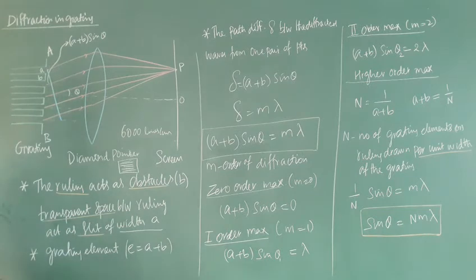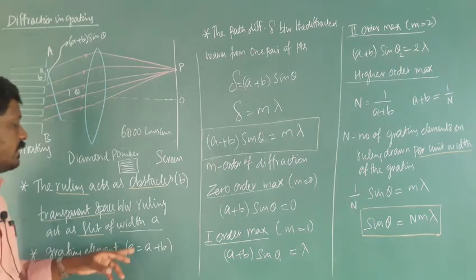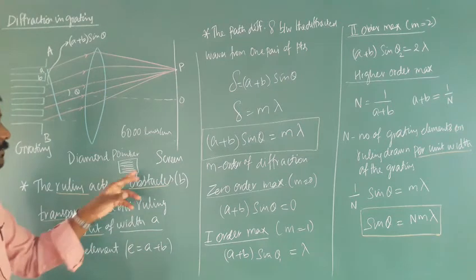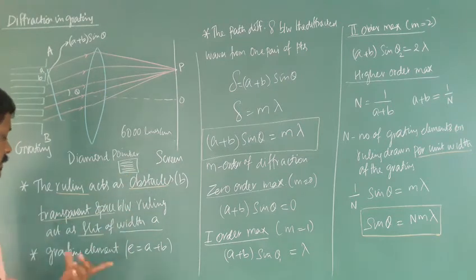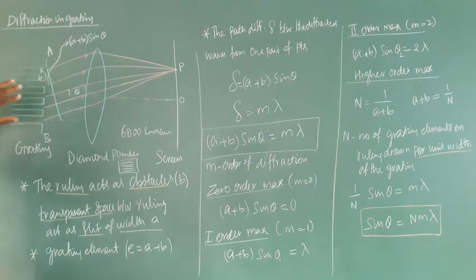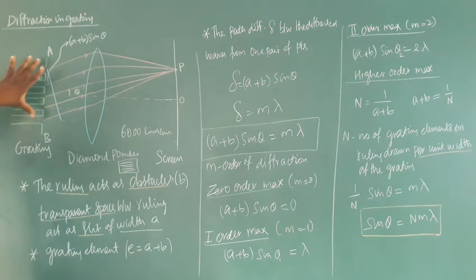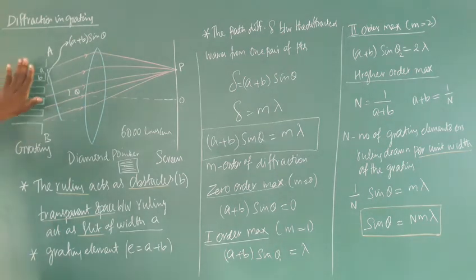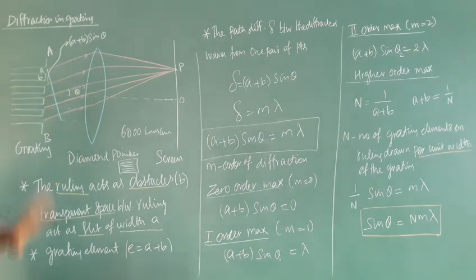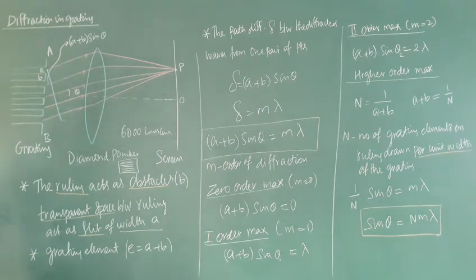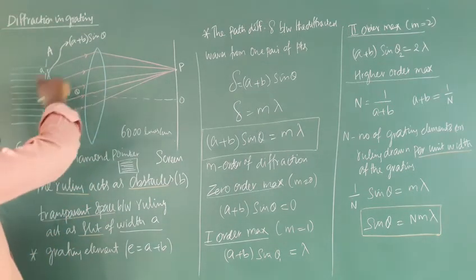The grating element is the combination of that slit and obstacle, that is A plus B. The successive corresponding points in the grating are separated by the grating element. Monochromatic light is incident on the grating and is diffracted, because the wavelength of light is comparable to the width of the slit.